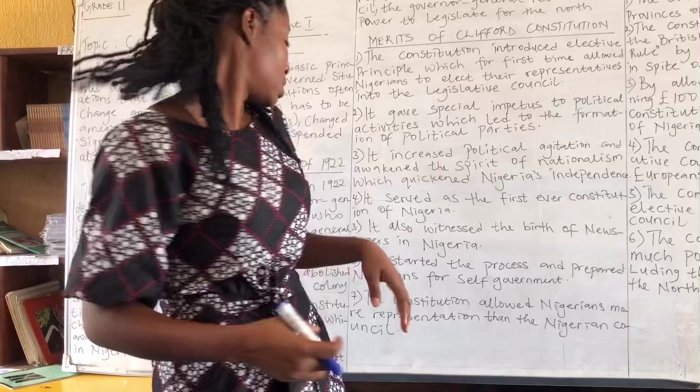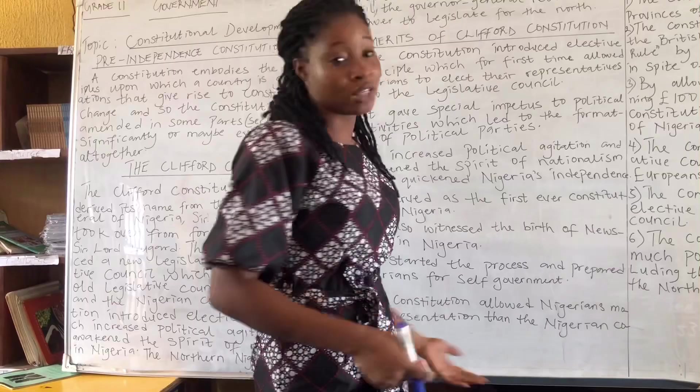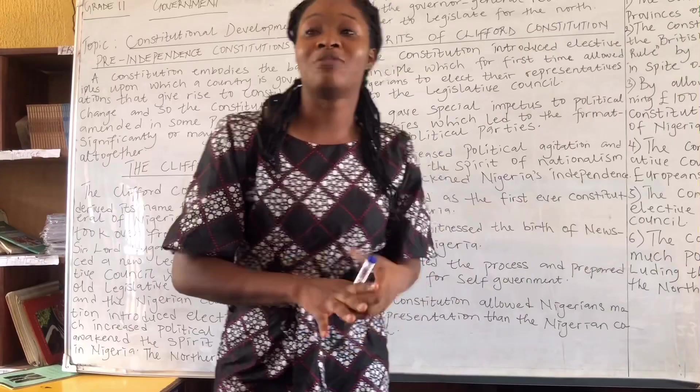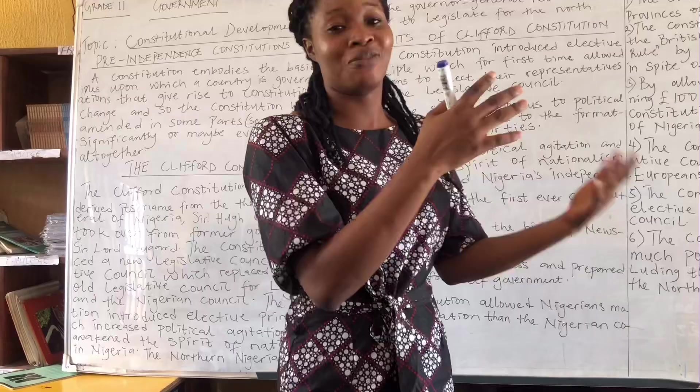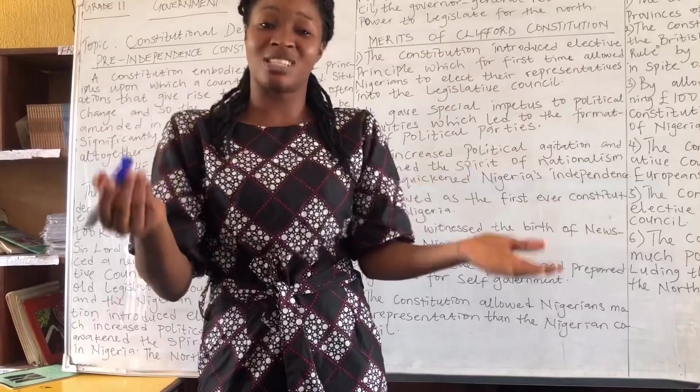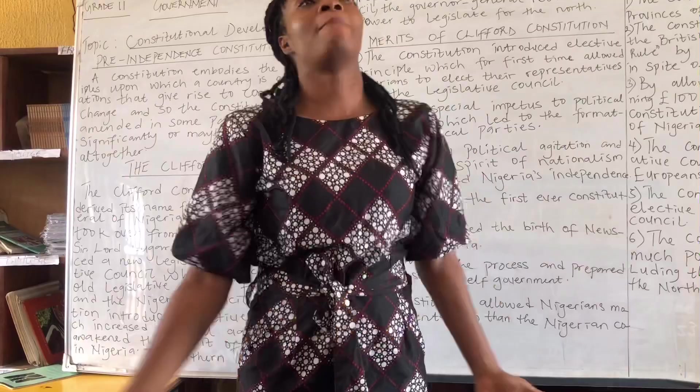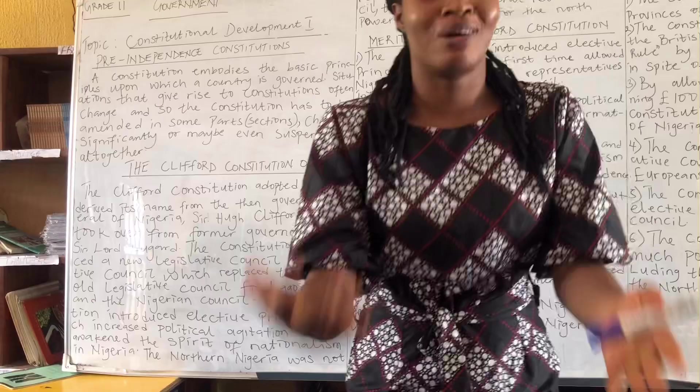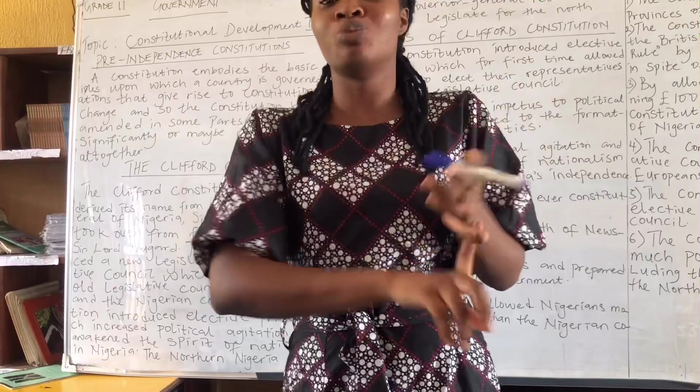Number seven: the constitution allowed Nigerians more representation than under the Nigerian Council. The old Nigerian Council had only three Nigerians and 46 British personnel. Those three Nigerians in the legislative council had virtually nothing to say — they were just there as a token representation of Nigeria, present as observers without being able to contribute to anything.